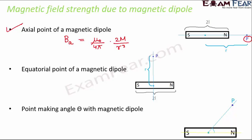Magnetic field strength is a vector quantity — it has both magnitude and direction. The direction of this magnetic field at the axial point is along the axis. Moving on to the equatorial point, this is a point located on the perpendicular which passes through the bar magnet.